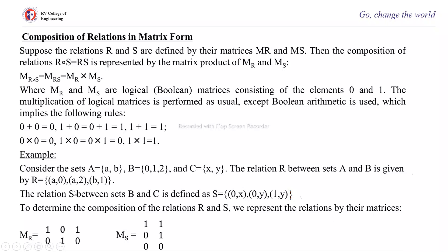For matrix M_R, the rows represent A={a,b} and columns represent {0,1,2}. The element (a,0) gives a 1 in row a, column 0; (a,2) gives a 1 in row a, column 2; and (b,1) gives a 1 in row b, column 1. For matrix M_S, rows represent B={0,1,2} and columns represent {x,y}. The element (0,x) is row 1 column 1; (0,y) is row 1 column 2; and (1,y) is row 2 column 2. The number of 1s in the matrix equals the number of elements in the relation.